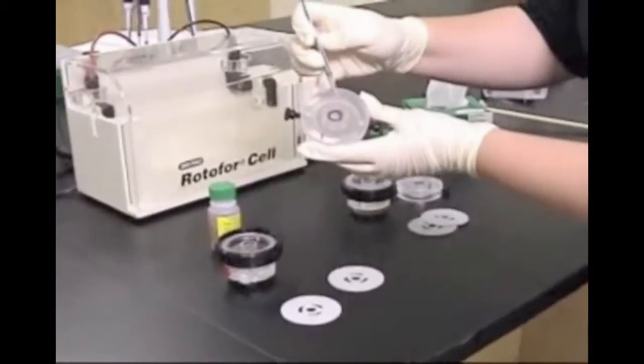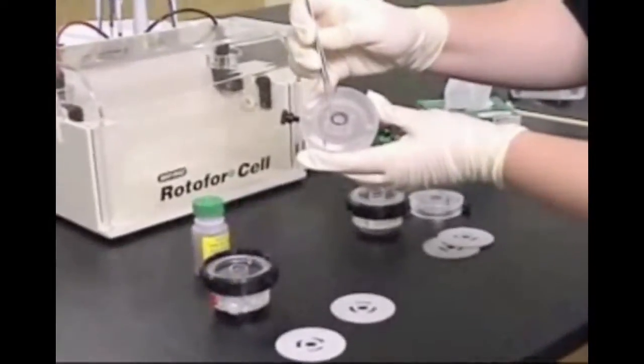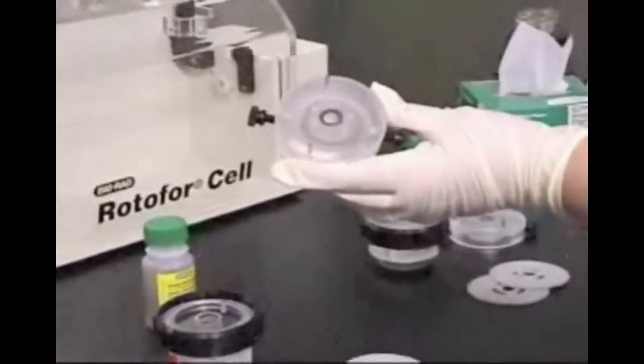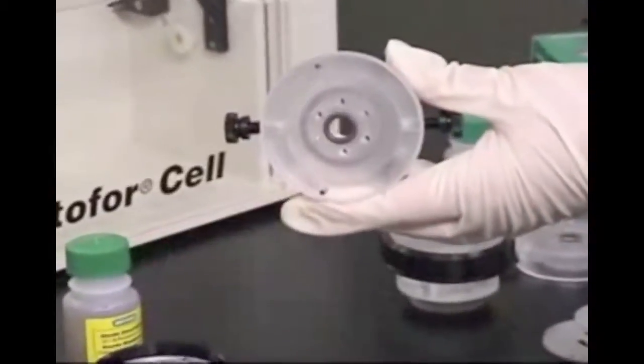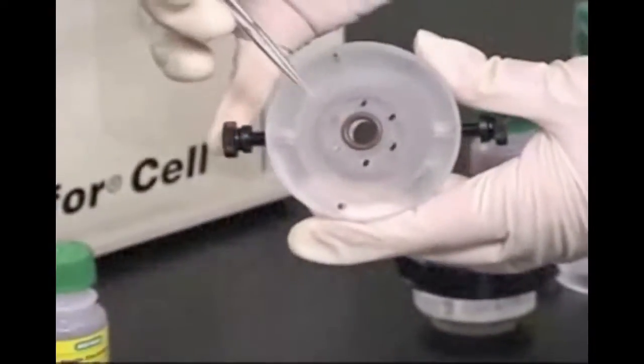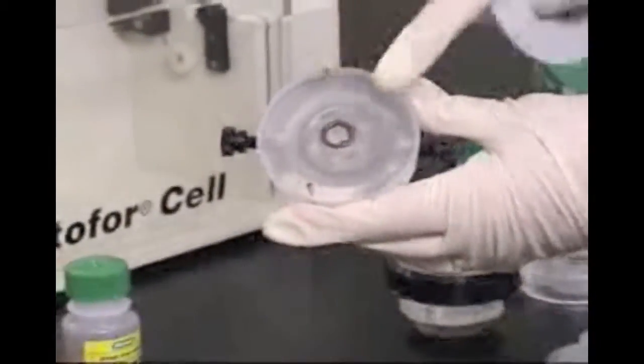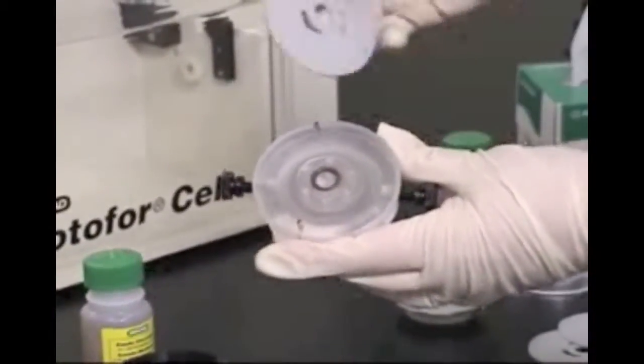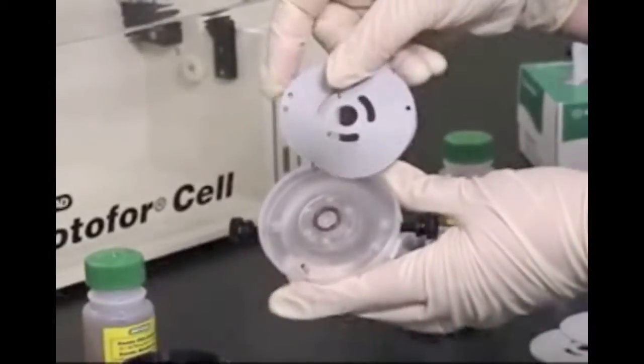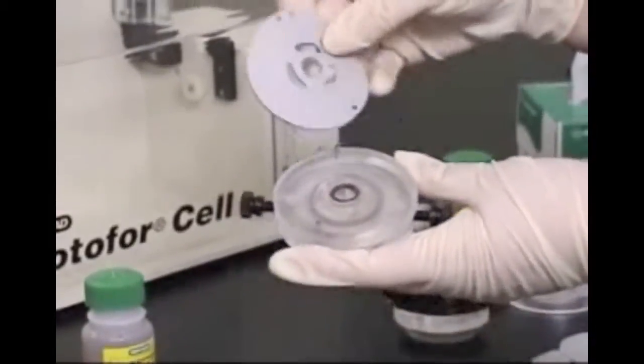Pick up the inner component. Surrounding the inner hole, there is a series of six smaller holes that provide current flow between the electrode and focusing chambers. Place one silicone gasket over the two alignment pins so that the three oblong holes on the gasket do not obstruct those six holes.